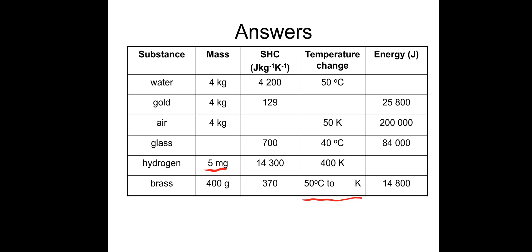The first one: 840,000 joules. Second one for gold: temperature change of 50 degrees Celsius - you could have said 50 Kelvin, that's fine as well because it's a temperature change. Air has a specific heat capacity of 1000 joules per kilogram per Kelvin. Glass: 3 kilos of mass. The next one, remember for hydrogen 5 grams - if you get this wrong, 5 grams would be 5 times 10⁻³ kilos.